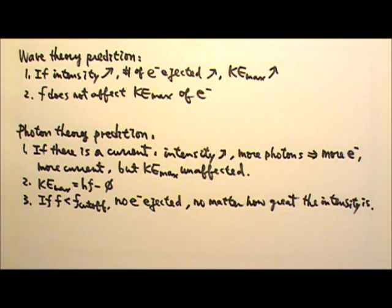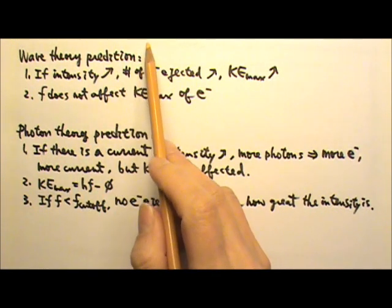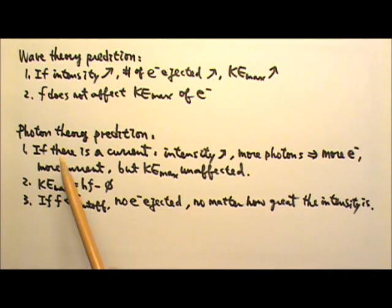And Robert Milliken's experimental result showed that the wave theory predictions failed, and the photon theory prediction successfully predicted the experimental results.